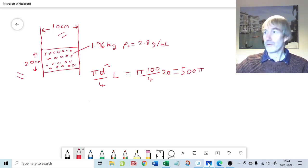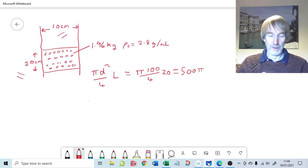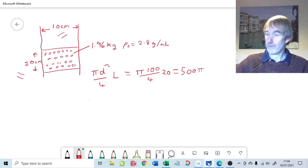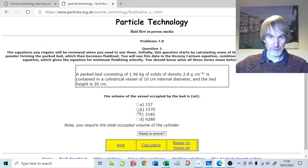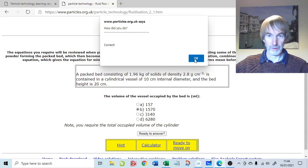I have my little trusty calculator here. 500 times 3.14, that'll do, is 1570. So we know that the answer is 1570 centimeters cubed. Let's just check that. Ready to answer. Correct. Good news.